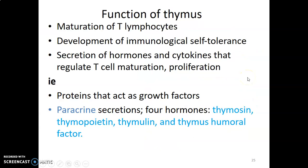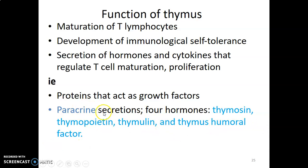The functions of the thymus include: maturation of T lymphocytes, and helping to develop immunological self-tolerance so the body tolerates its own cells and avoids autoimmune conditions. The nurse cells produce hormones and cytokines that regulate T cell maturation and proliferation by paracrine secretion. The four hormones produced by the thymus are thymosin, thymopoietin, thymulin, and thymic humoral factors — these are paracrine, not endocrine, and act as growth factors for T cell maturation and proliferation.